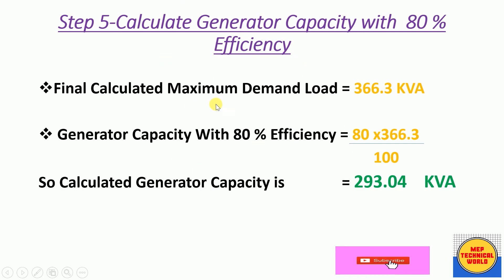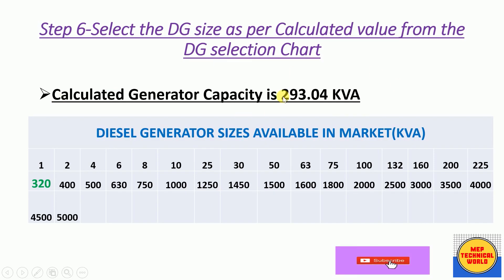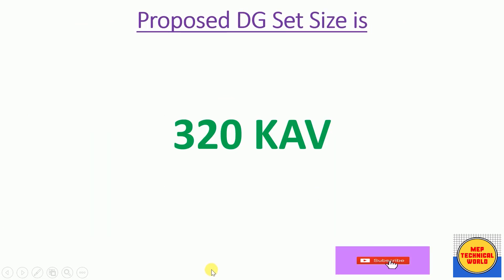In Step 6 we select the DG size from the DG selection chart based on the calculated generator capacity of 293.04 kVA. Looking at the DG selection chart showing sizes available in the market, the nearest available size above 293.04 kVA is 320 kVA. Therefore, our proposed DG size is 320 kVA.